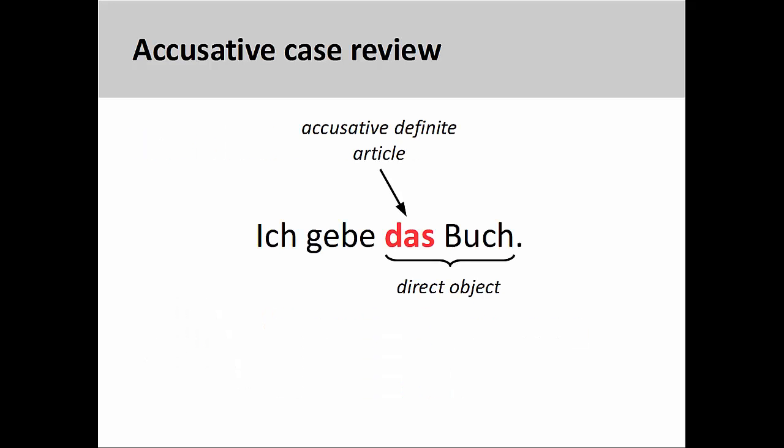You will recall from the presentation on the accusative case that the direct object receives the action of the verb. For example, in the sentence 'ich gebe das Buch' — I give the book — the book receives the action of being given. In German, the direct object is expressed through the accusative case.